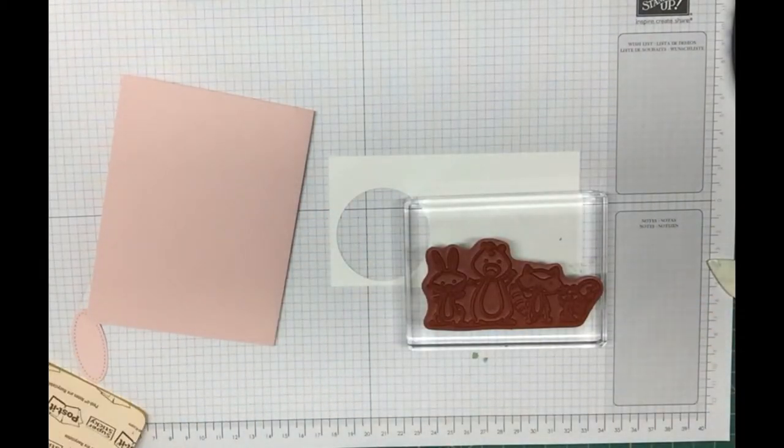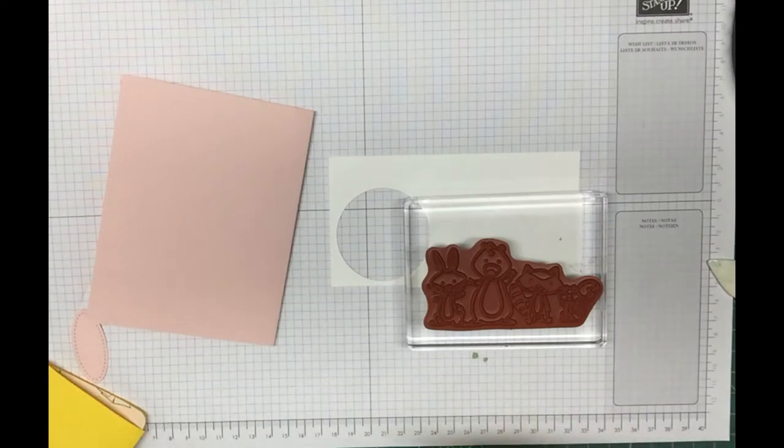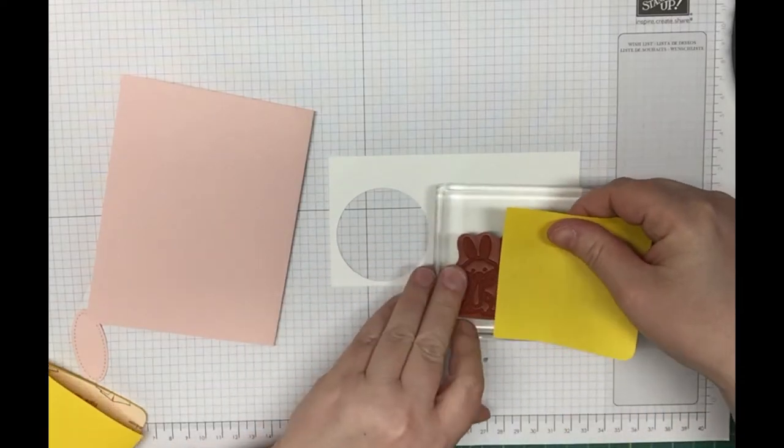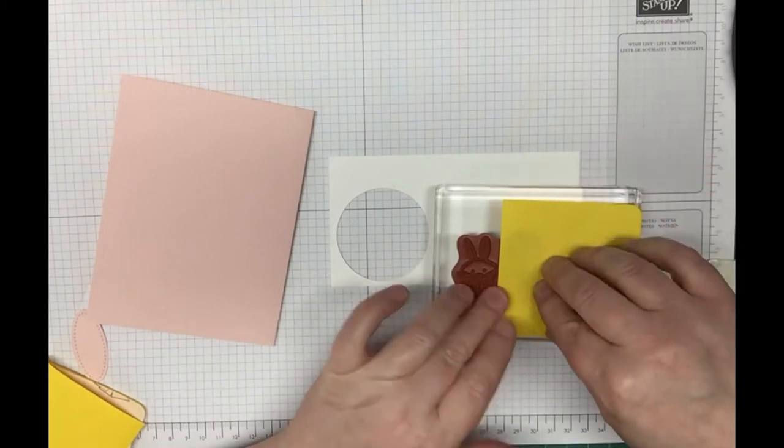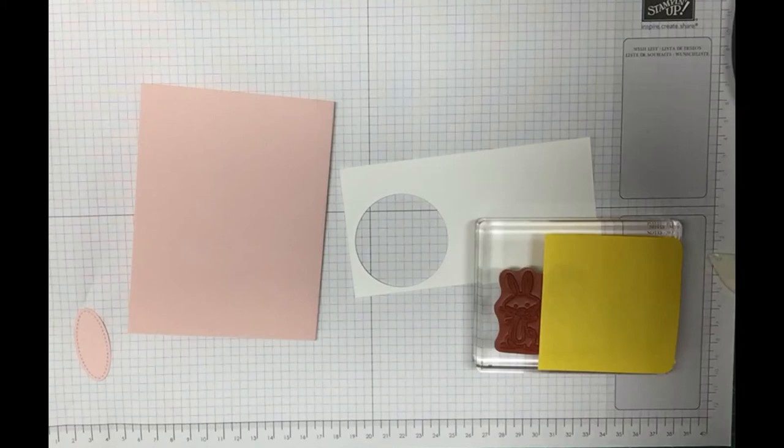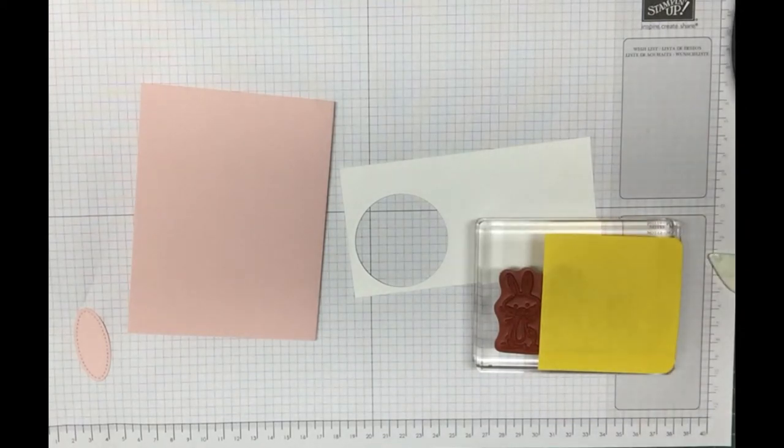I'm going to take a sticky note and block off the rest of the animals with that sticky note. I'm going to use Memento ink to ink this up.